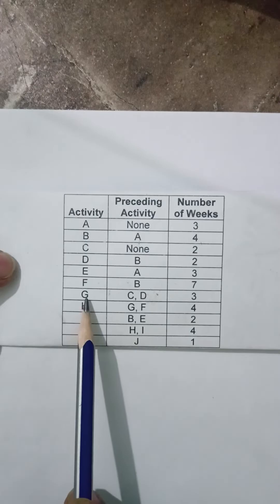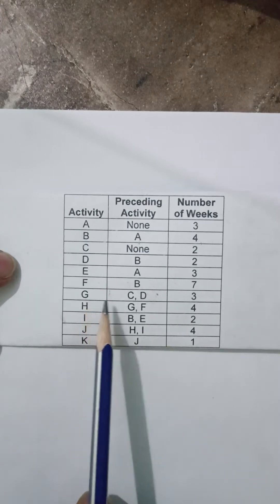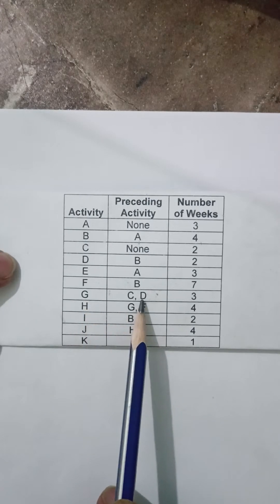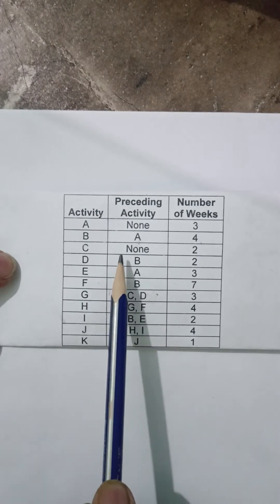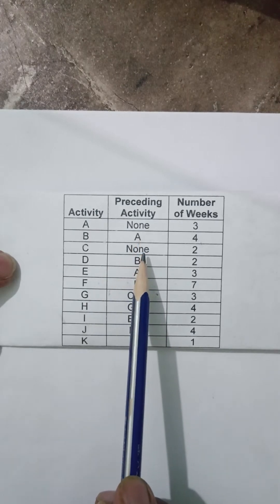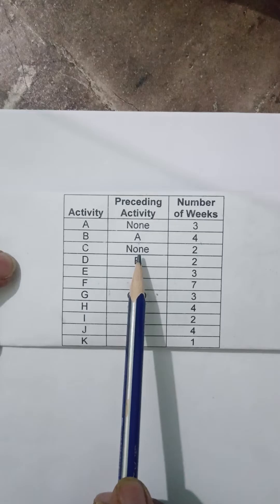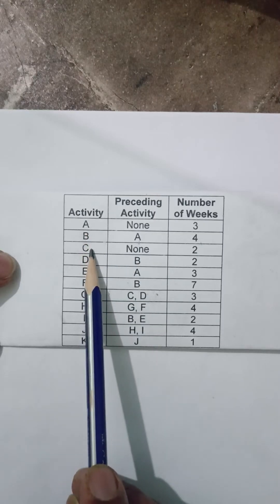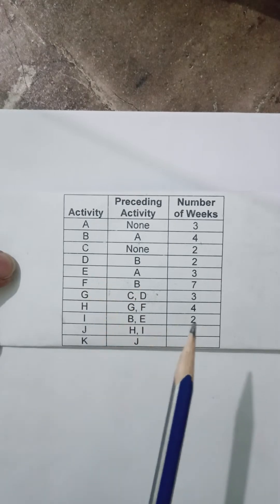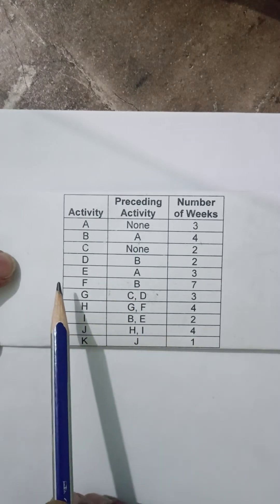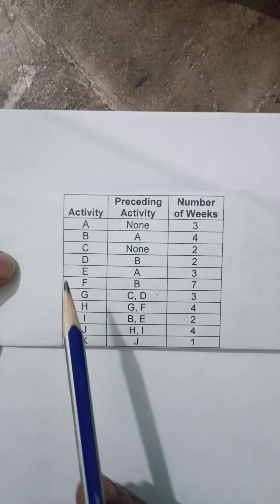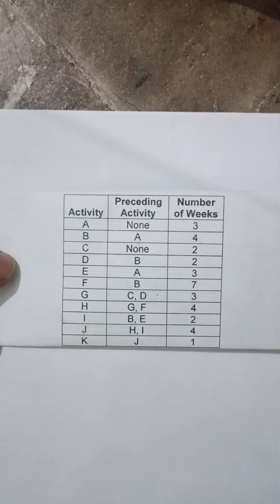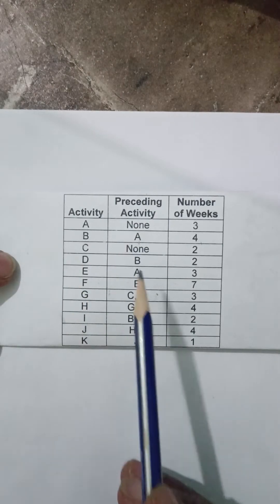Activity G can only start when C and D are finished. Also, there are certain activities which do not require any other activity to start. Activities A and C can start the project because we don't have to depend on any other activity for starting these activities.